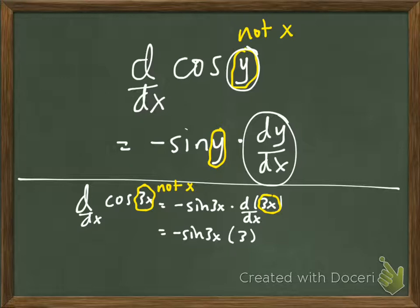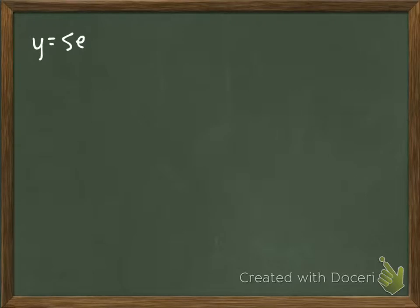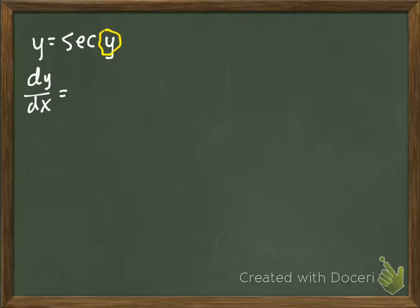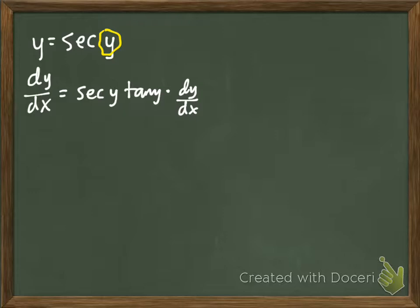Let's practice with secant. If y equals secant(y), then dy/dx equals — using the formula for secant, which is secant tangent — we get secant(y)·tangent(y), but then we also have to multiply by dy/dx. That's the answer.